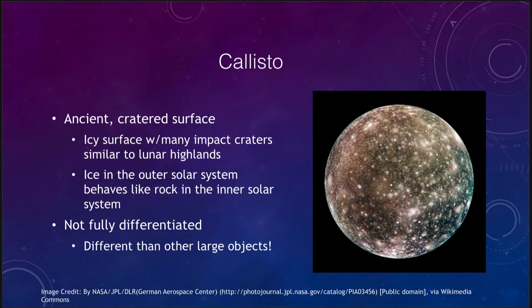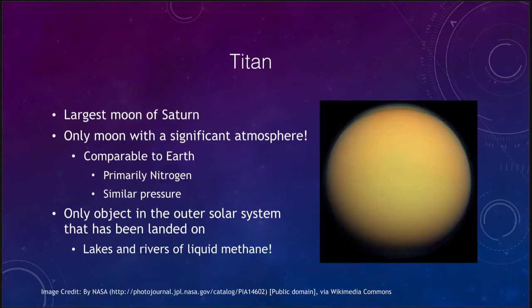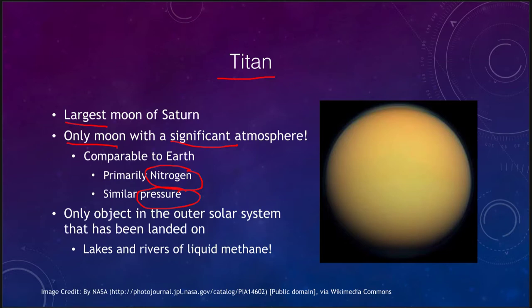Moving out to Saturn, it has only one large moon — Titan. Titan is the largest moon of Saturn and the only large moon around the planet. It is also the only moon with a significant atmosphere, and in many ways it's comparable to the Earth. The pressure is about the same and it's made primarily of nitrogen. Even though you could not breathe there, if you could stand on Titan, the atmospheric pressure would feel about 50% heavier but not unbearable like the pressures on Venus.